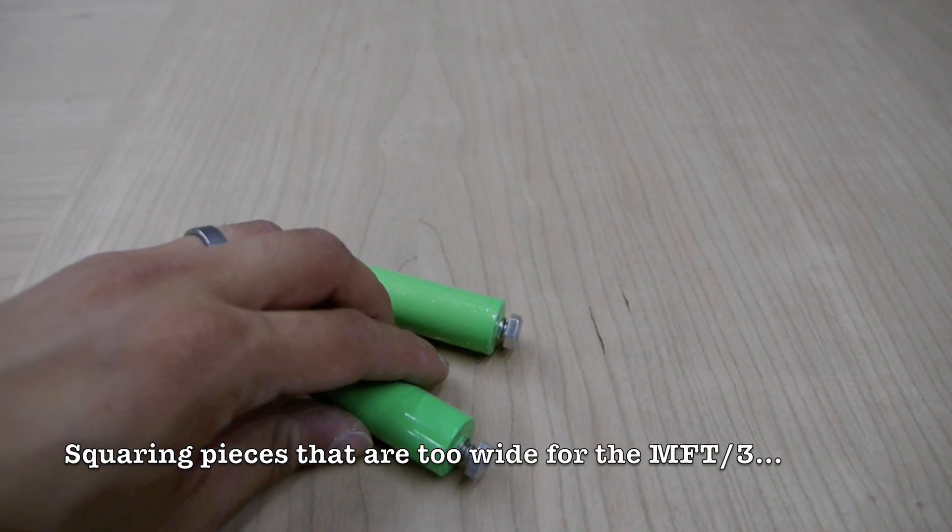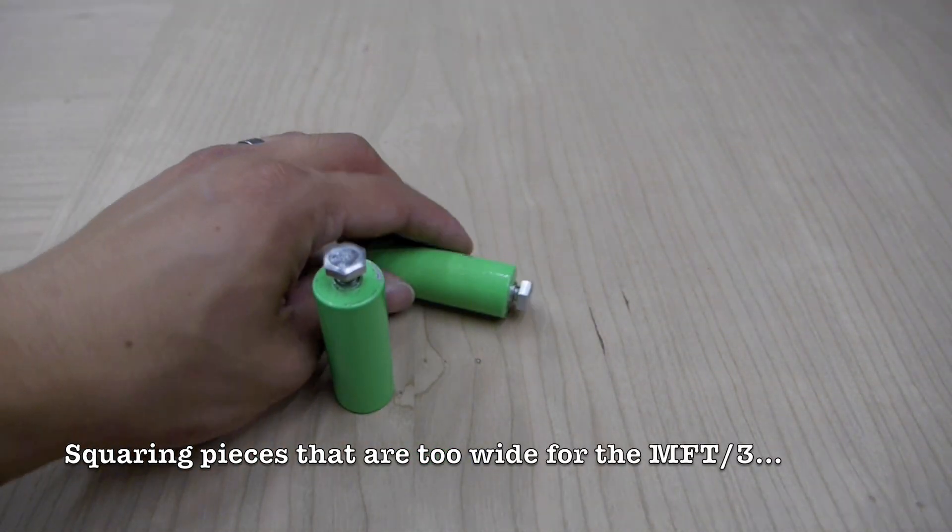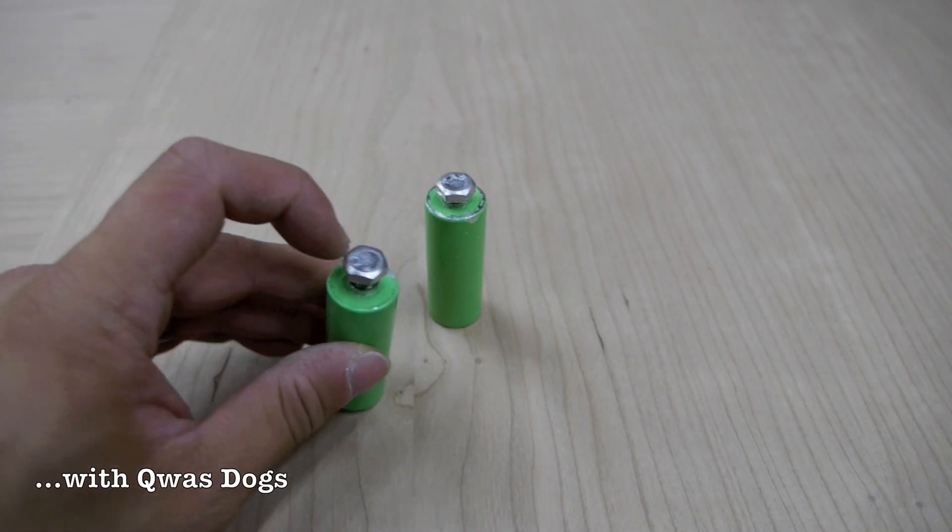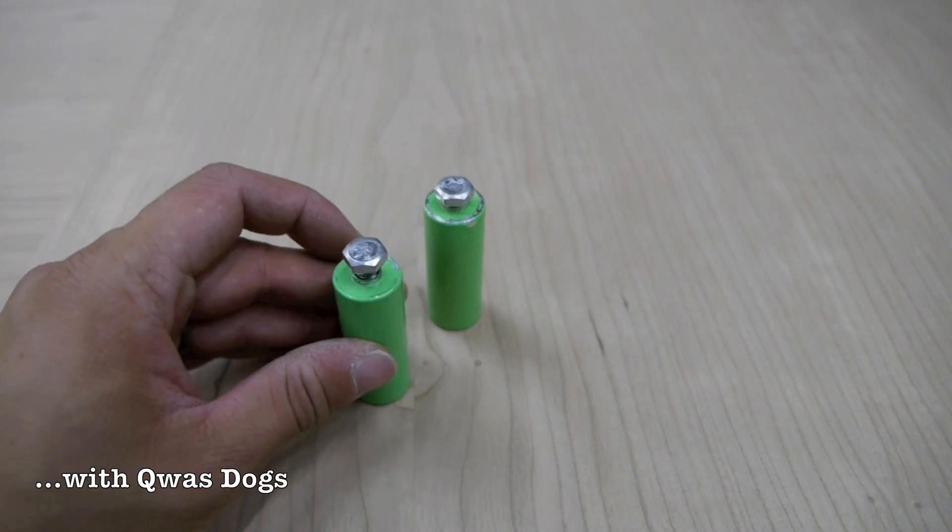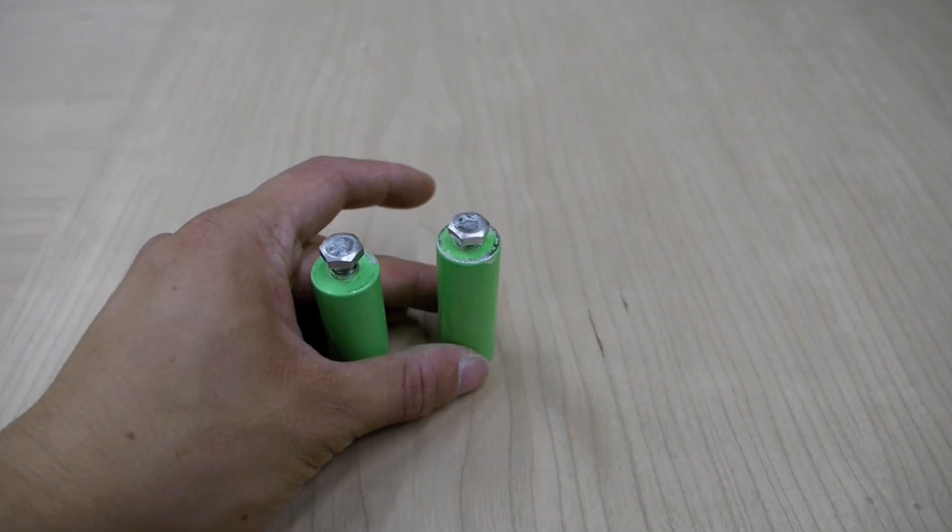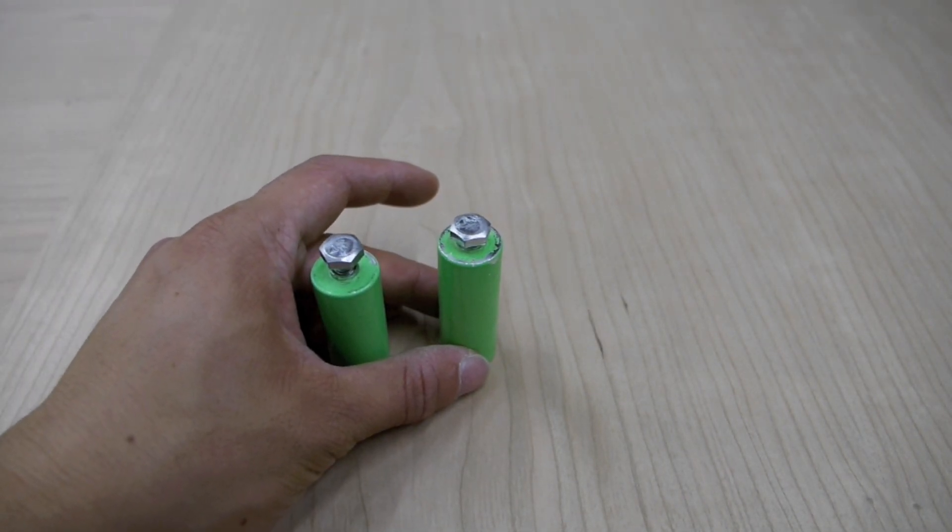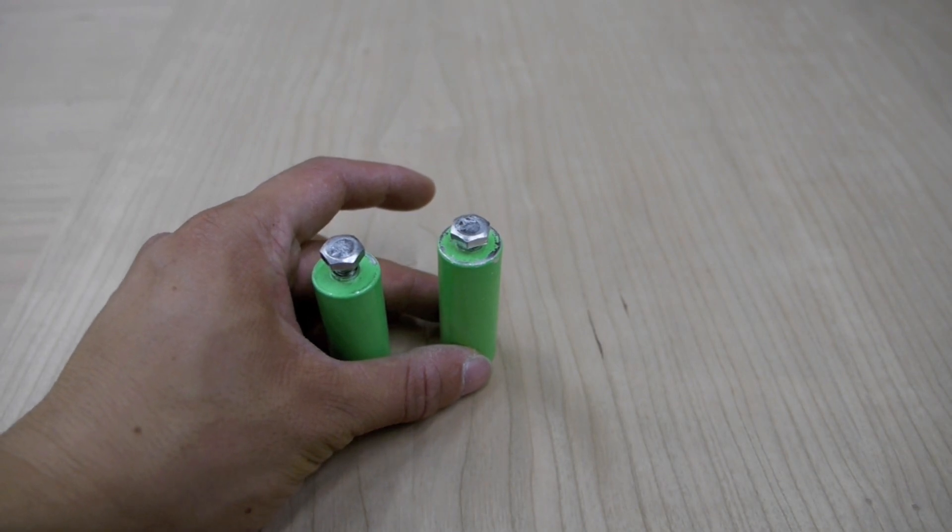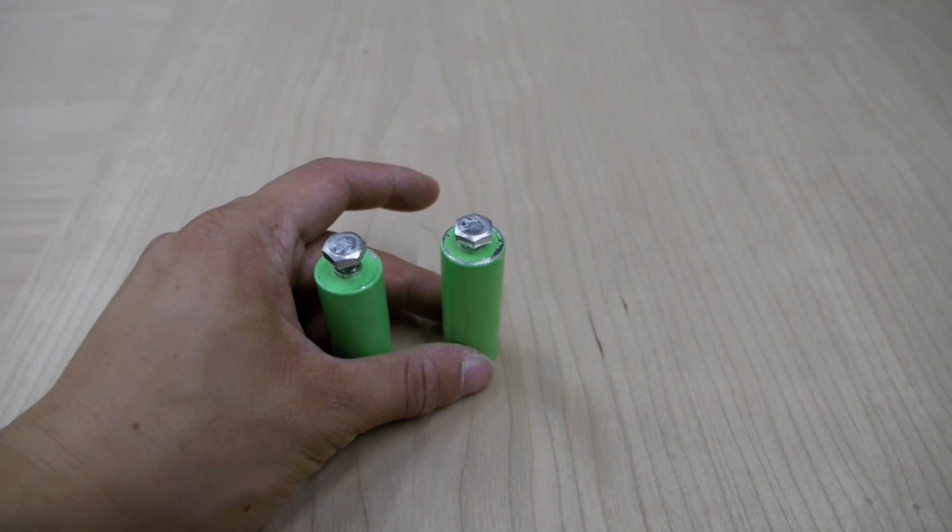So these here are rail dogs and they attach to the Festool guide rail and this nut here slides into the T-Track on the bottom of the rail and this enables the track to utilize the holes on the MFT perforated top and this will help me make a square cut.